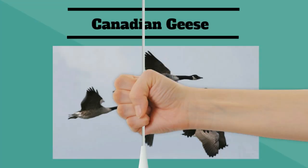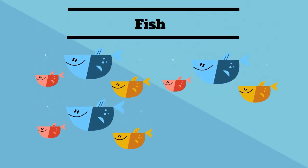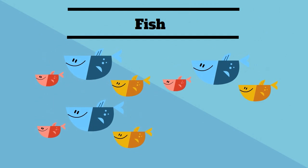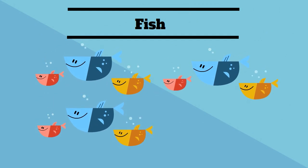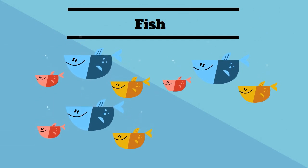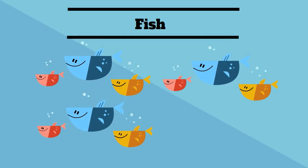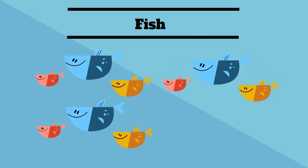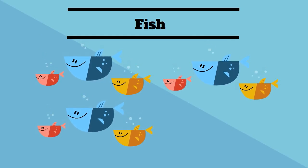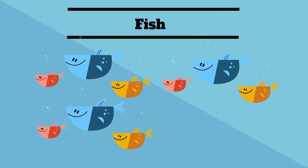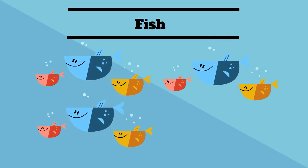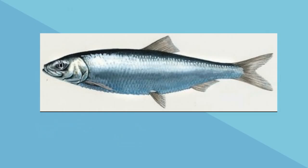In fish, about 120 species of fish, including some salmon, will migrate each year between salt water and fresh water. Herring migrate around parts of the North Atlantic Ocean.